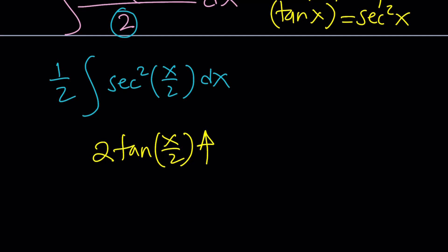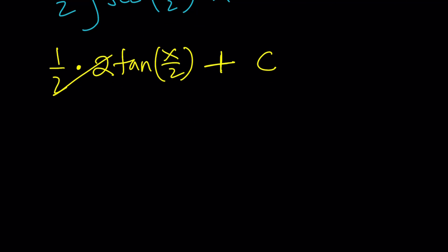But there's a 1 half sitting outside which is waiting to be multiplied by 2. And guess what? That's going to cancel out. And of course don't forget the infamous constant c. And when you simplify this you're going to get the exact same answer. So the integral of dx over 1 plus cosine x is tangent x over 2. This probably inspired the Weierstrass substitution.